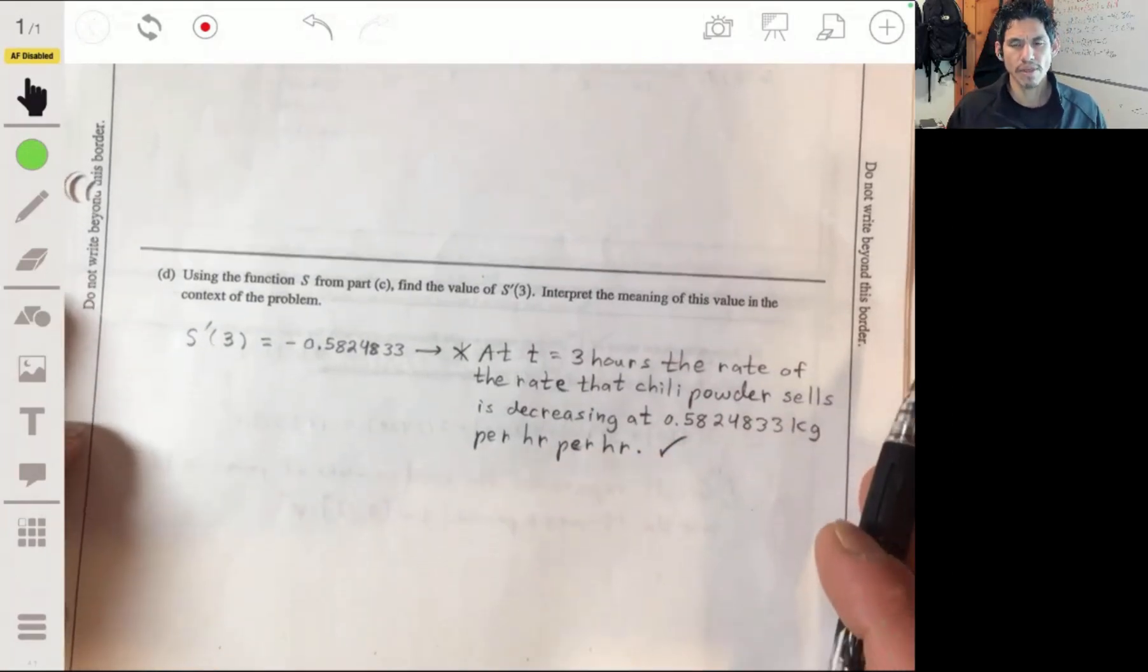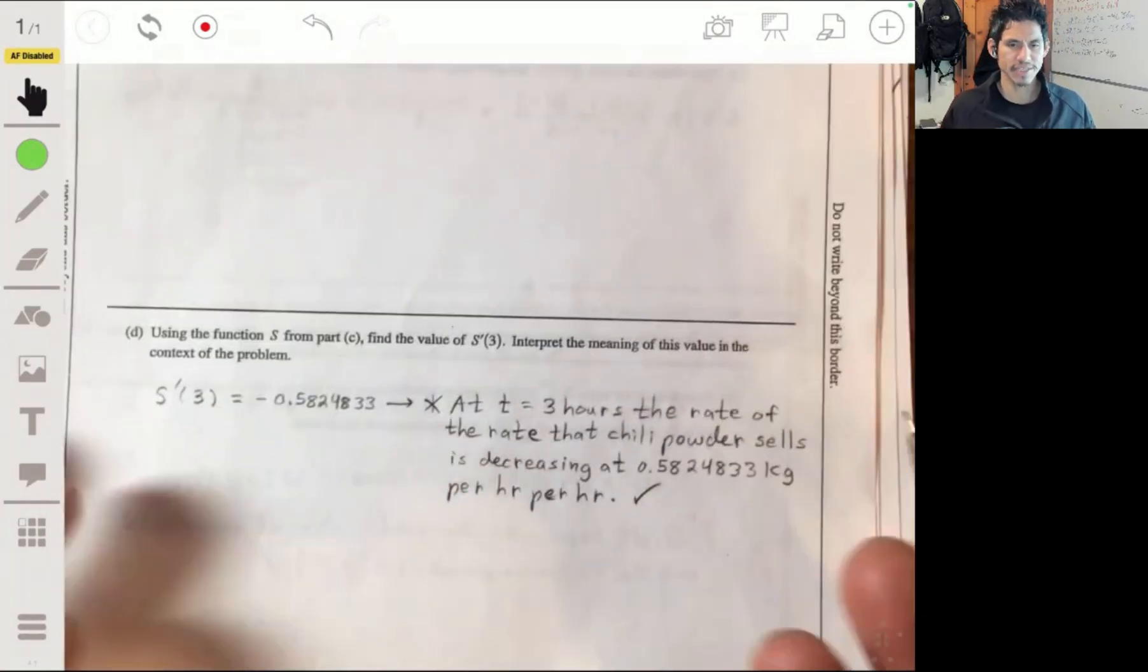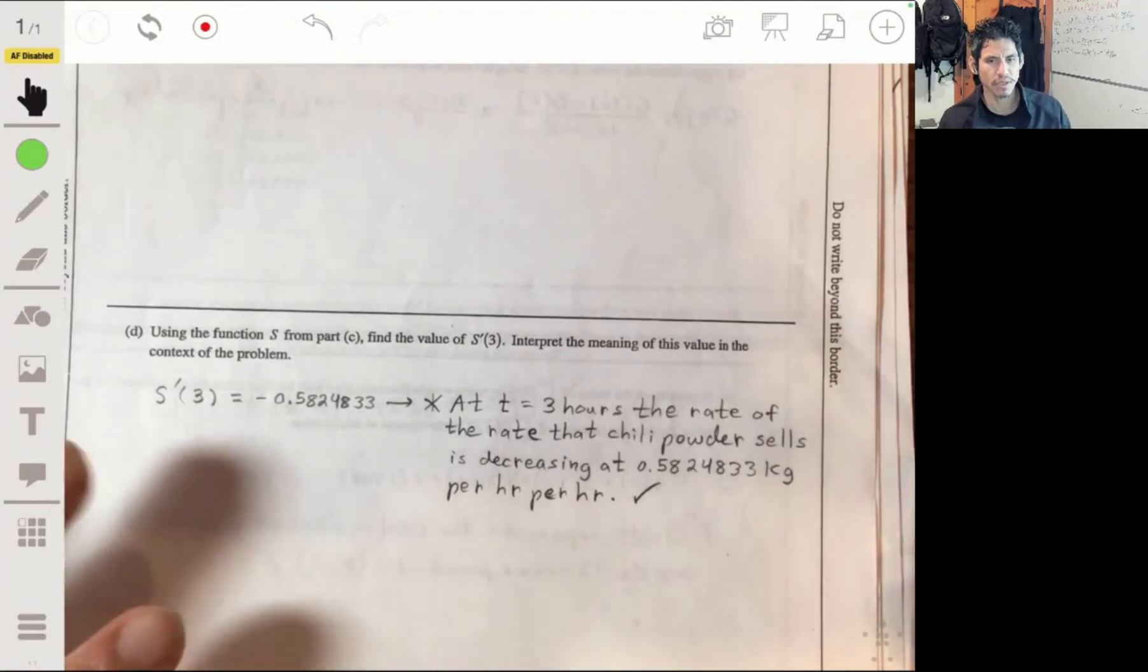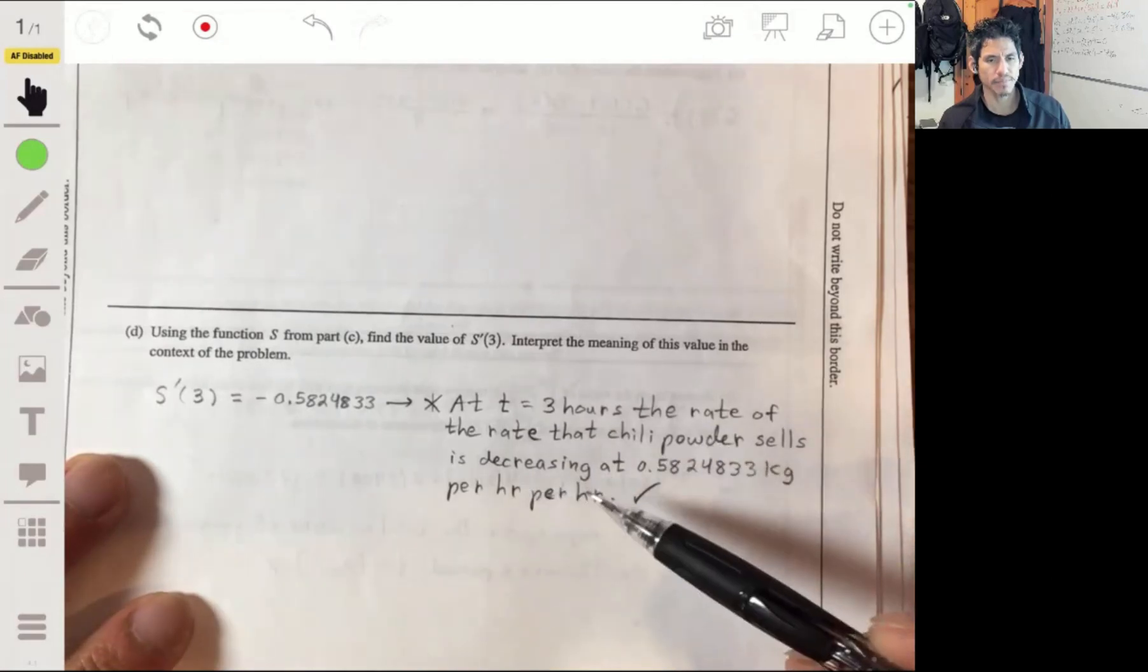And yes, they want the per hour per hour. Make sure you do per hour per hour. I know this kind of sounds weird, but it does make sense. If you've taken physics, it'll be easier for you to understand that. Just go with it, you'll catch on to it, because they will dock you down if you don't do that.